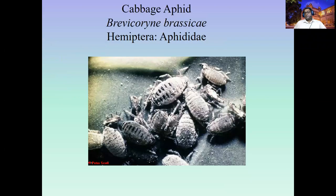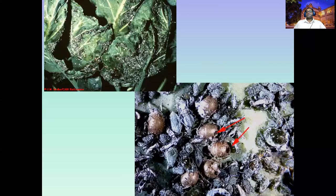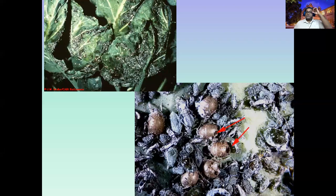Minor pests of cabbage include aphids. Brevicoryne brassicae is the most specific aphid of the cabbage plant and can be expected in cabbage family crops. It belongs to Aphididae, Hemiptera. They live in groups and cause damage by crinkling of leaves, and leaves become yellowish and unmarketable. If severely attacked, aphids appear mummified — the brownish ones are parasitized by parasitoids. If your field is free from pesticides, parasitoids can manage increasing aphid populations. Sri Lanka is now moving toward pesticide-free agriculture.